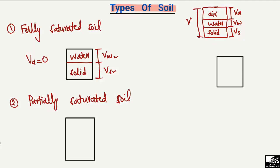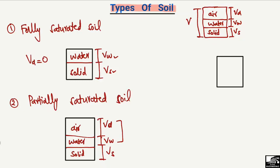The second type is partially saturated soil. Partially saturated soil has three components: solid, water, and air. It contains both the volume of air and the volume of water, so all three components are present in this type of soil.